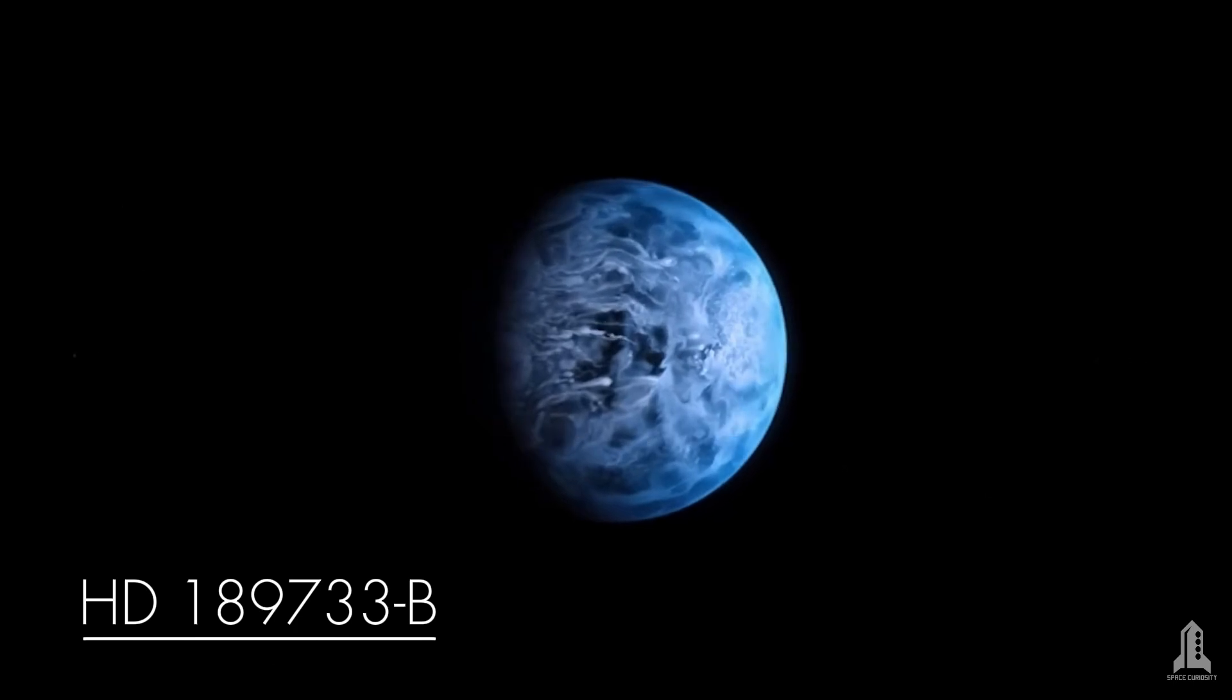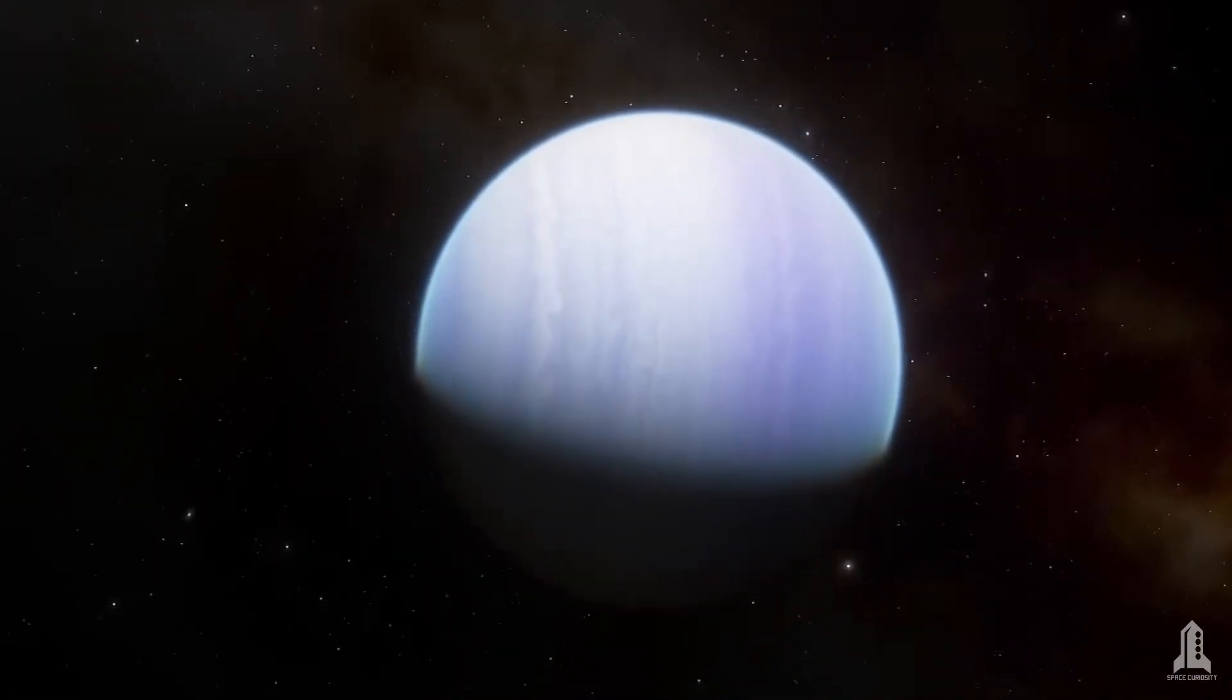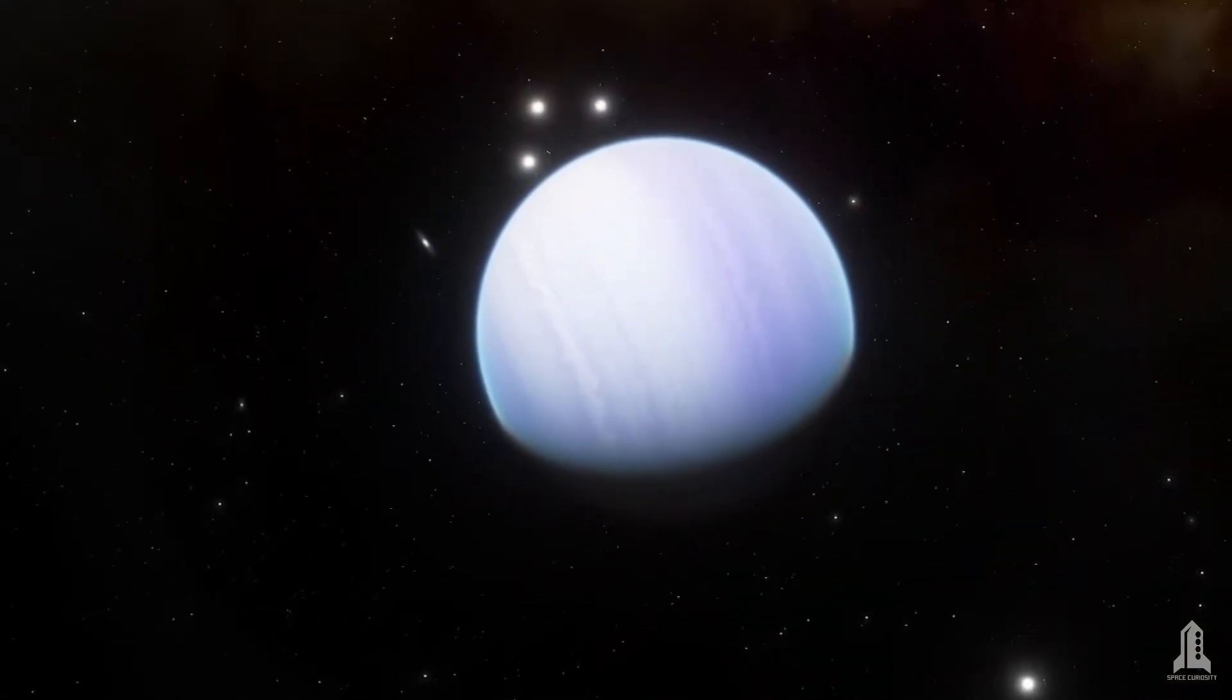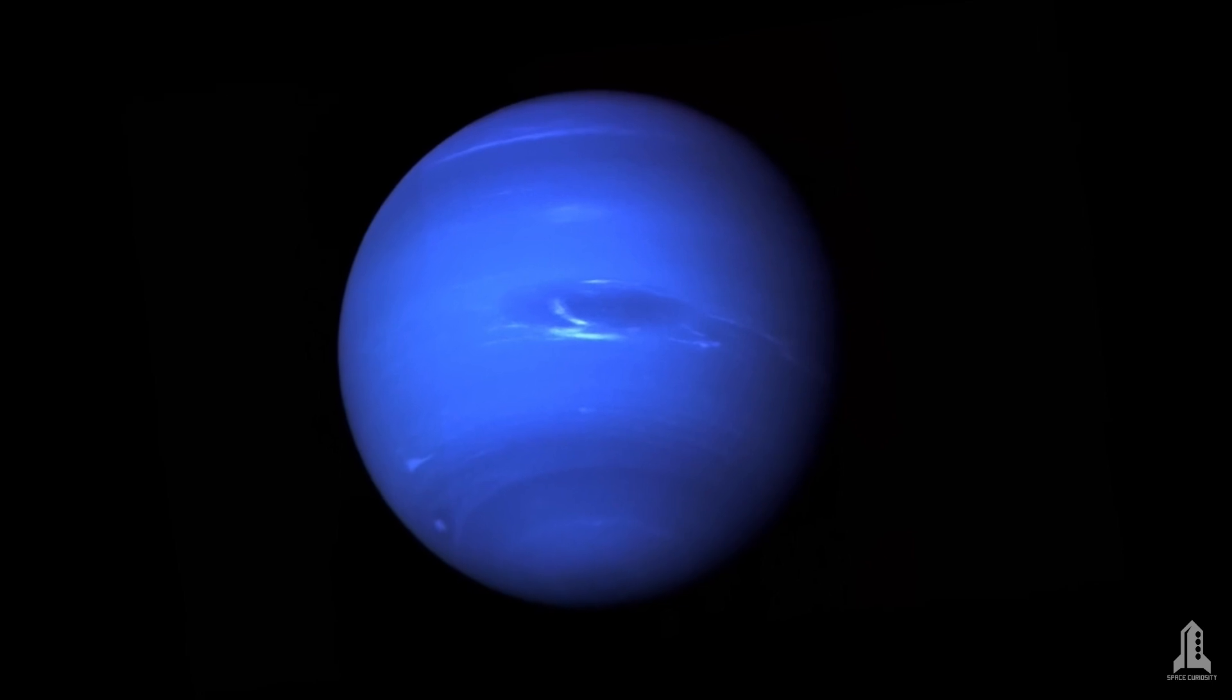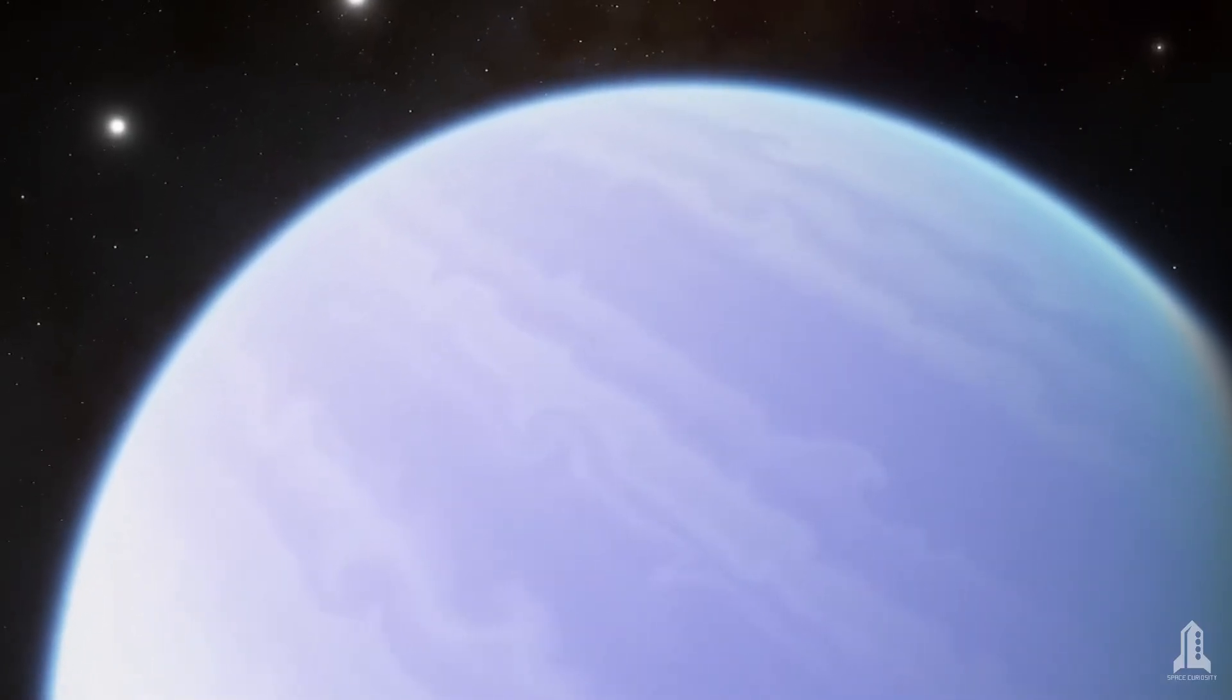HD 189733b, an exoplanet located about 63 light years from Earth, which at first glance might seem inviting with its bright blue color, similar to our Neptune. But behind this tranquil facade lies a hellish world with extreme conditions that make it one of the most hostile planets ever discovered.